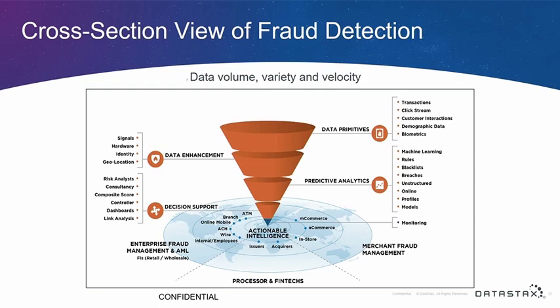Then we add decision support — where our customers can look at the transactions and what the decisioning system said to do, and ultimately make a call. If you've ever purchased something online and the next day got a phone call to verify your address before they ship the merchandise, more than likely you triggered a fraud alert. If you said you didn't order those items, they would mark that as fraud in the system, and that signal would go back through our system.